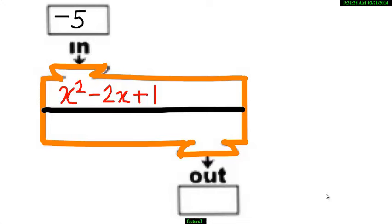The value of the expression becomes minus 5 square minus 2 times minus 5 plus 1. So you can see the literal x gets replaced with minus 5.